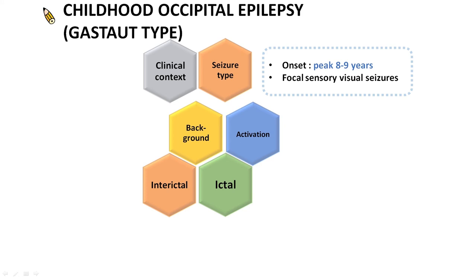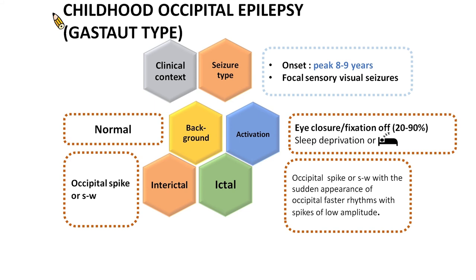To summarize, childhood occipital epilepsy, Gastaut-type, is a self-limiting childhood epilepsy with onset in later childhood. Patients have focal sensory visual seizures that are usually easily controlled, and remission occurs within 2 to 4 years of onset. The EEG background is normal. Occipital spike or spike-and-wave is seen in the interictal EEG of the majority but may only occur in the sleep EEG. Central temporal spikes, frontal, or generalized spike-and-wave may co-exist. Fixation sensitivity is seen in about 20 to 90% of patients. EEG abnormality is enhanced by sleep deprivation or by sleep.